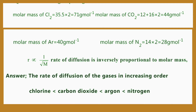Rate of diffusion is inversely proportional to molar mass. Rate of diffusion of the gases in increasing order: nitrogen is less than argon, less than carbon dioxide, less than chlorine.